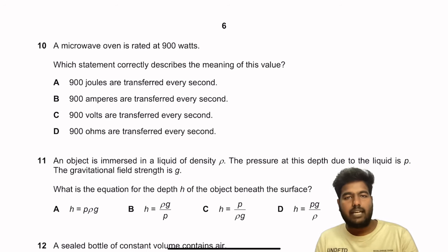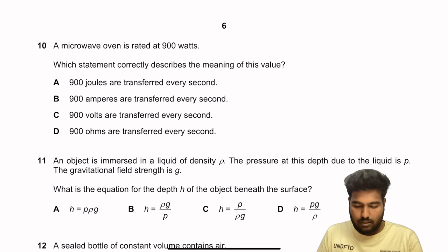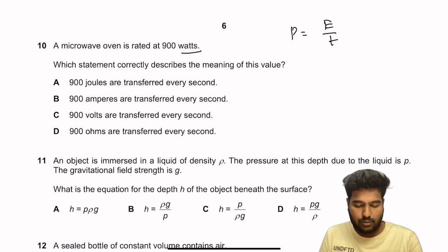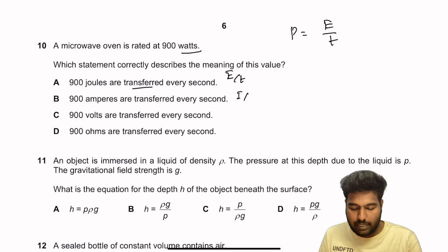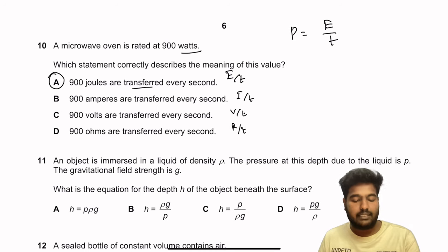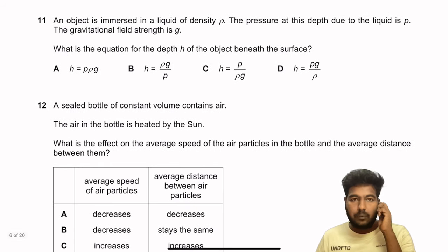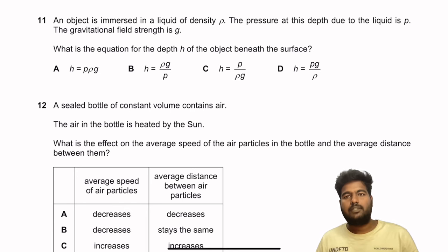Question 10: A microwave is rated at 900 watts. What does this mean? Power = energy ÷ time. So 900 W means 900 joules are transferred every second. Option A is the right answer.